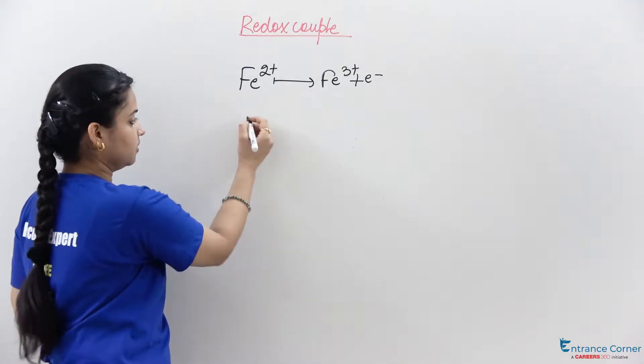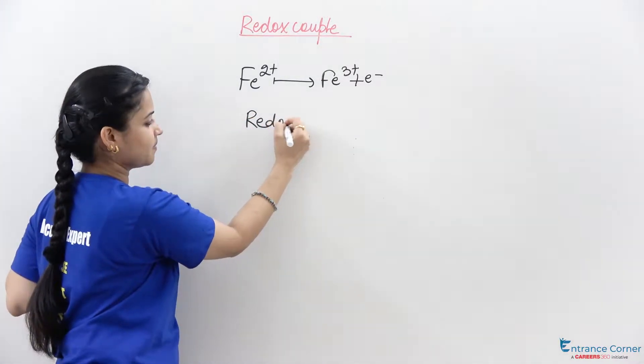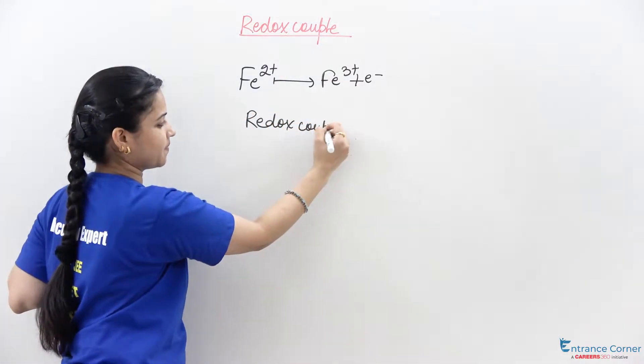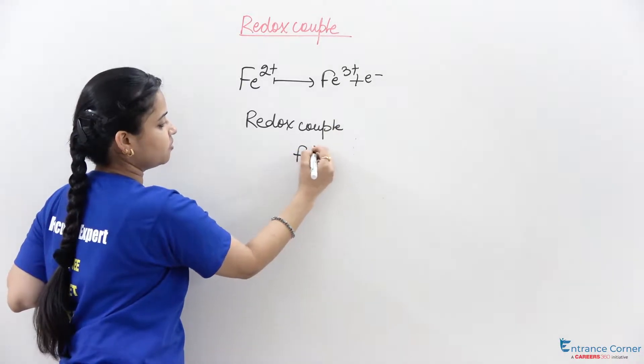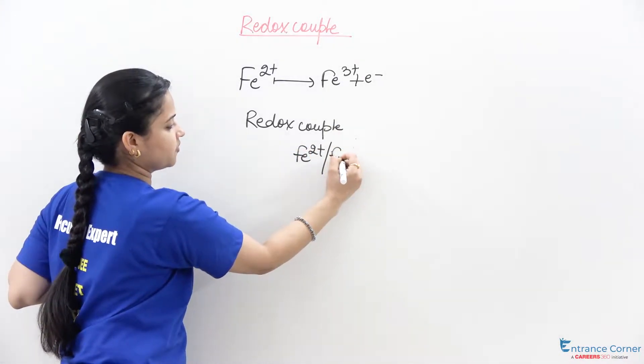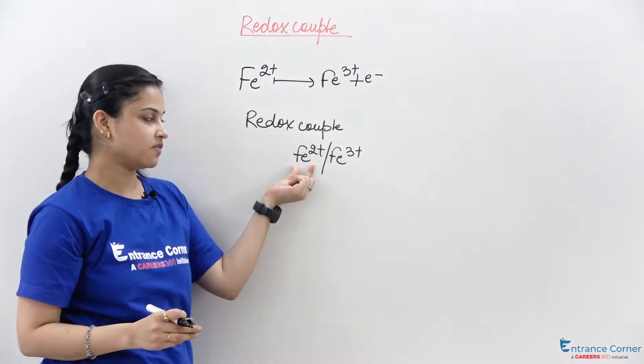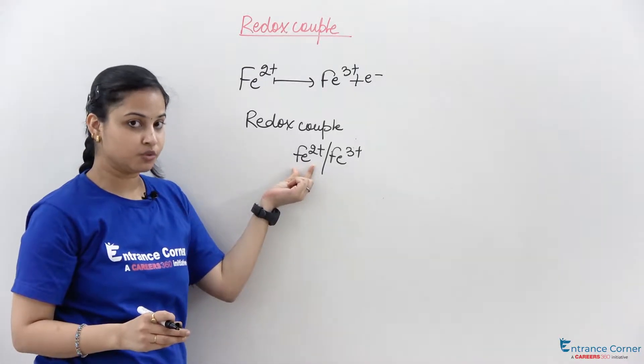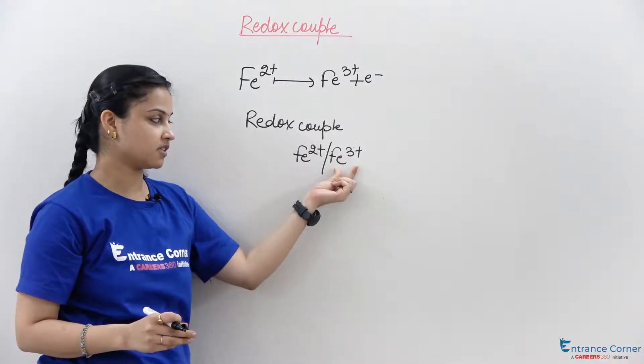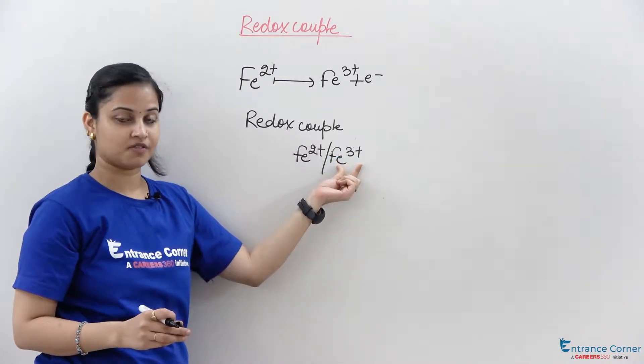Now what is the redox couple? The redox couple is Fe2+/Fe3+. Fe2+ is the reduced form of Fe3+, and Fe3+ is the oxidized form of Fe2+.